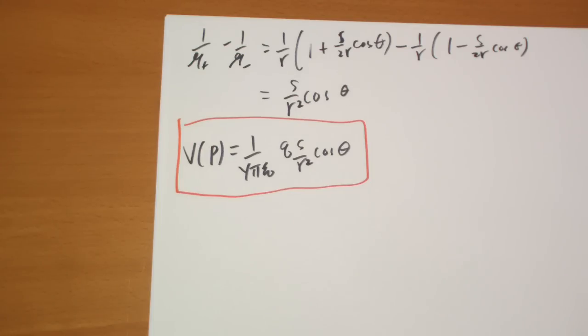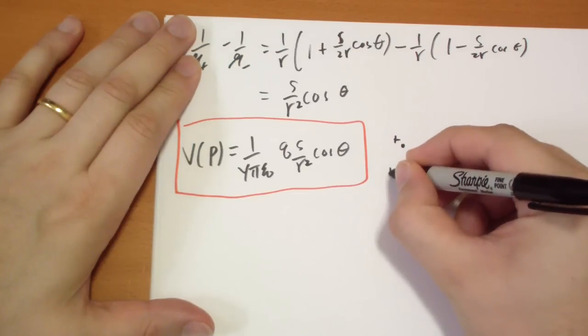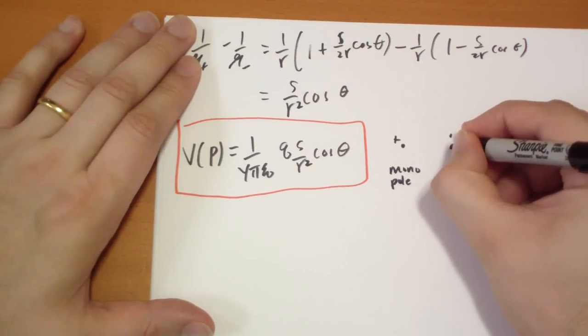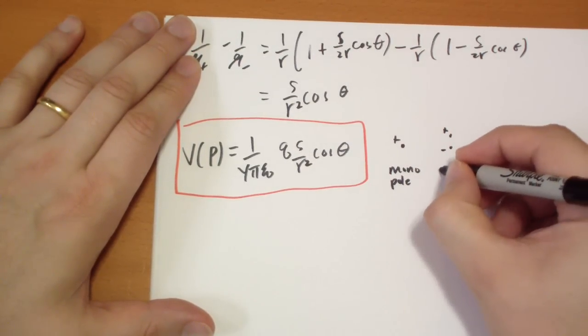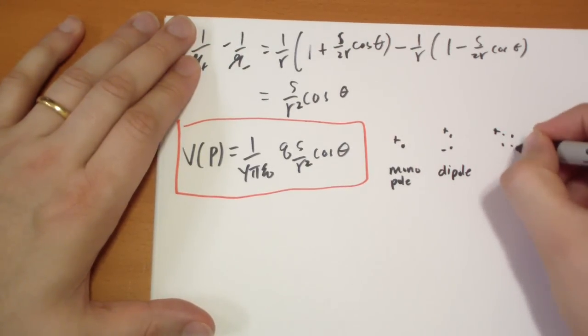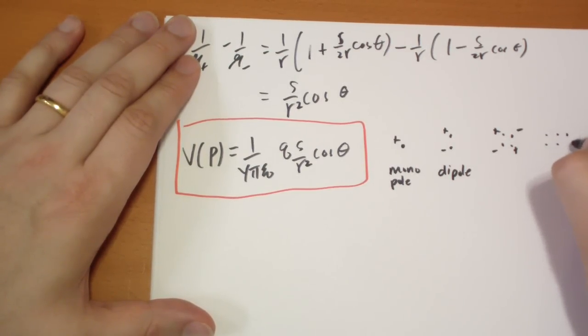And similarly, so a dipole, this is a monopole. You just have a charge. Mono means 1. A dipole is you have two charges, plus and minus. A quadrupole is four charges. And an octopole is plus, plus, plus, plus, minus, minus, minus, minus.